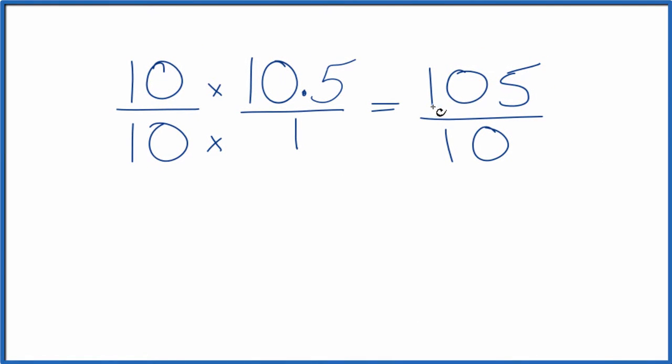5 would go into 105 21 times. 5 goes into 10 2 times. So we could say that 105 over 10, that's equivalent to 21 over 2. We can't simplify that any further.